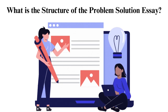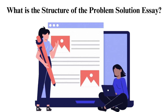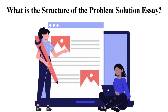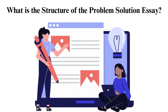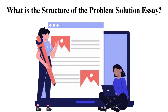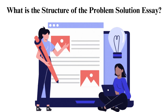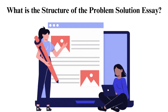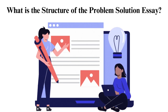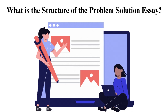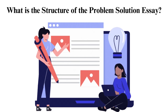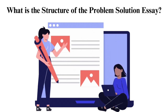Keep your introduction as impressive as possible, since this captures the reader's attention. If your reader loses interest here, they won't read your paper, and you won't achieve your purpose for writing. The problem and solution essay thesis should be a one-line answer to the topic question. It's best to insist here that the issue needs a solution urgently and state it.